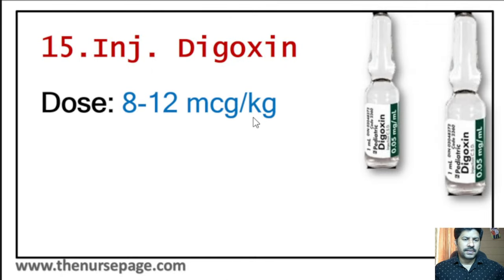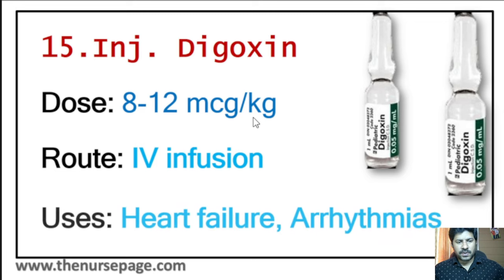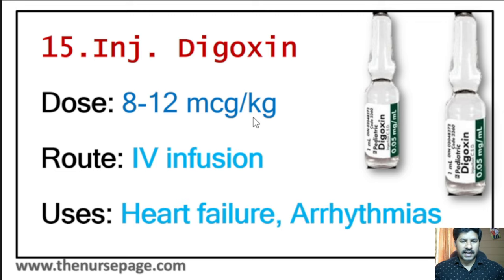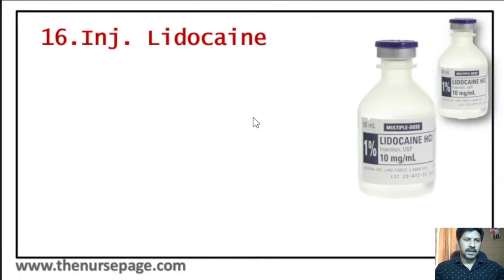Fifteenth injection is digoxin. Dose is 8 to 12 microgram per kilogram. Route of administration is IV infusion. Uses include heart failure and cardiac arrhythmia. If heart rate is below 60, injection digoxin cannot be given.